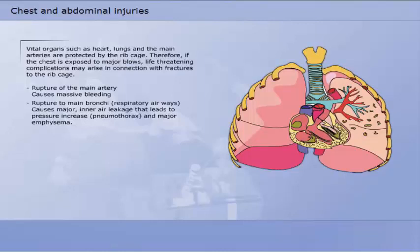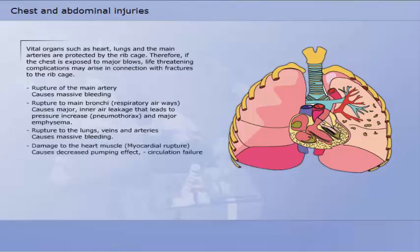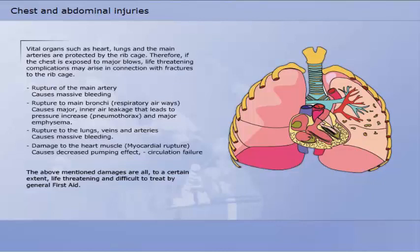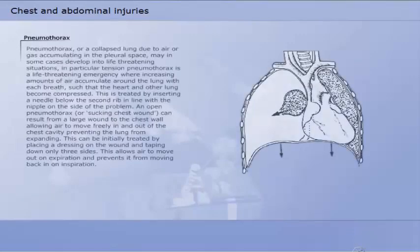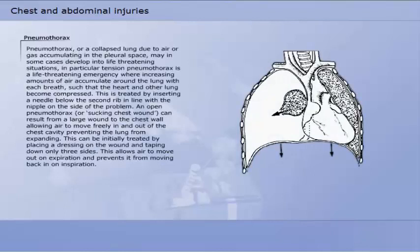Vital organs such as heart, lungs and the main arteries are protected by the rib cage, the thorax. Therefore, if the chest is exposed to major blows, life-threatening complications may arise in connection with fractures to the rib cage. Rupture of the main artery causes massive bleeding. Rupture to main bronchi causes major inner air leakage that leads to pressure increase and major emphysema. Rupture to the lungs, veins and arteries causes massive bleeding. Damage to the heart muscle causes decreased pumping effect, circulation failure. The above mentioned damages are all, to a certain extent, life-threatening and difficult to treat by general first aid.